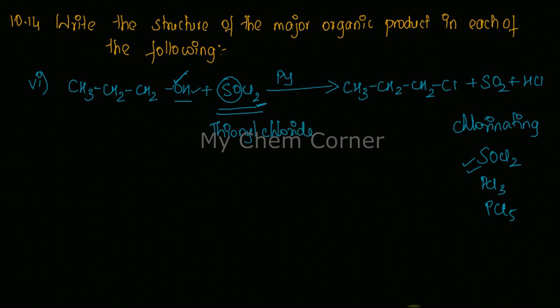So this compound, the reactant is called as butanol or butan-1-ol. The product is going to be called as 1-chlorobutane.